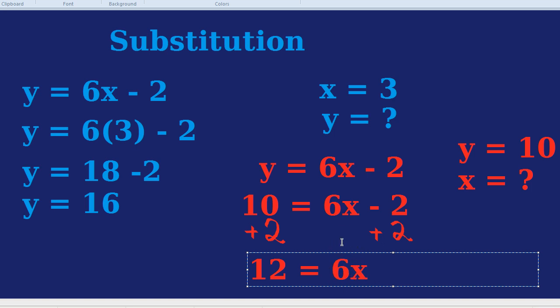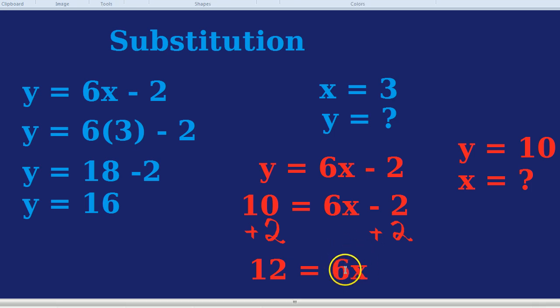Now we can focus on getting rid of the 6. The 6 next to the x means times by 6. And again, with an equation, to get rid of something, you have to do the opposite. The opposite to timesing by 6 is dividing by 6. So what we actually do is divide by 6 to both sides to get x on its own.